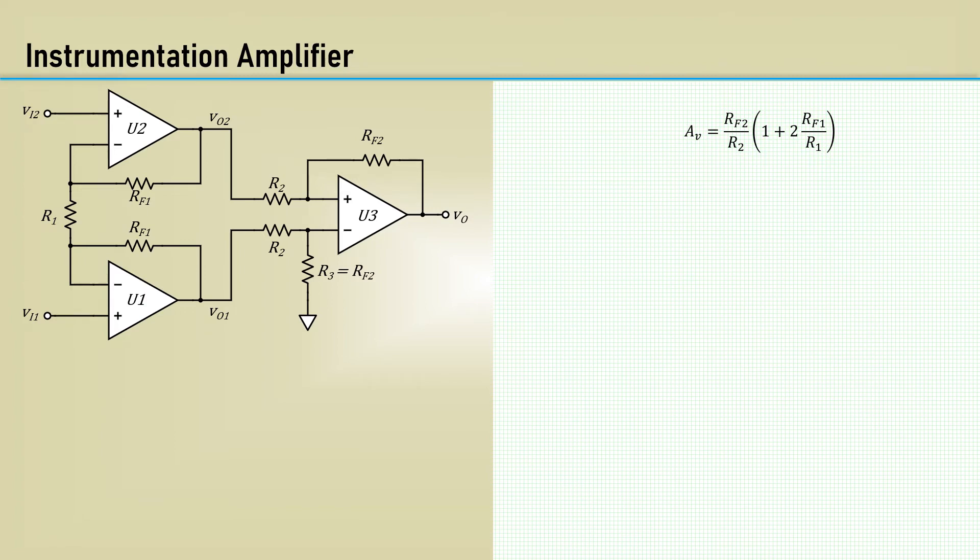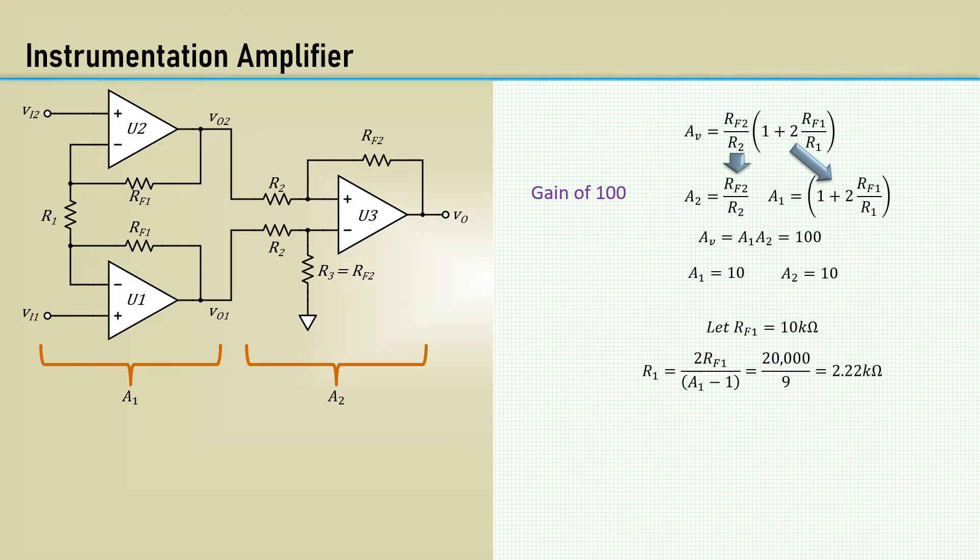Let's say we want to design an instrumentation amplifier to have a gain of 100. That gain must be divided between the two stages. We can split the equation to separately solve for A2 and A1, and give each stage a gain of 10. Let RF1 be 10k and solve for R1, which results in 2.2k. Then RF2 be 10k and solve for R2, which results in 1k.